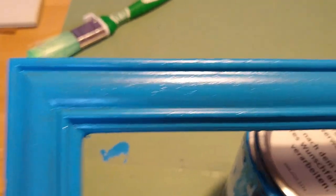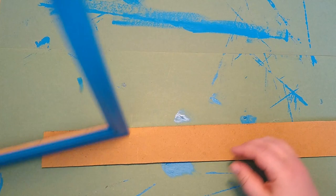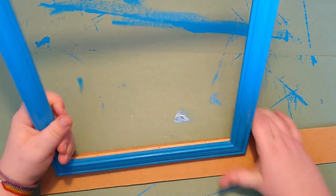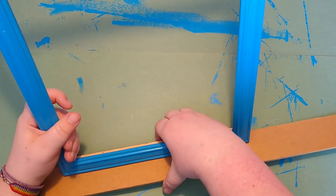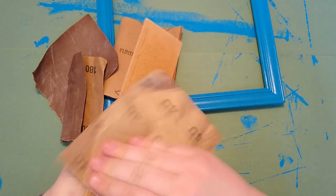The first coat didn't quite cover everywhere, so I'm adding a second one. Now at the bottom of the frame, I want to add a tray for the chalk pens, so I'm cutting this piece of particle board to length and sanding all the edges.